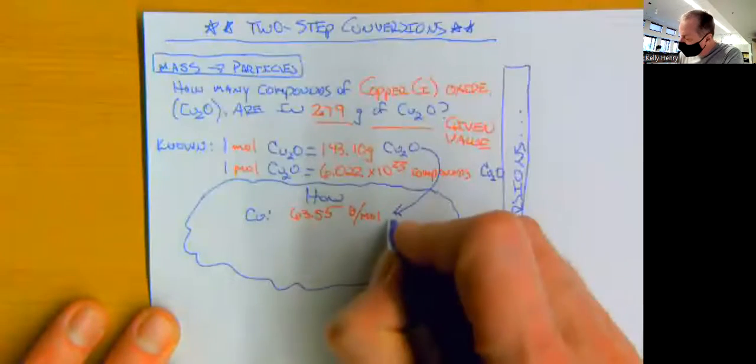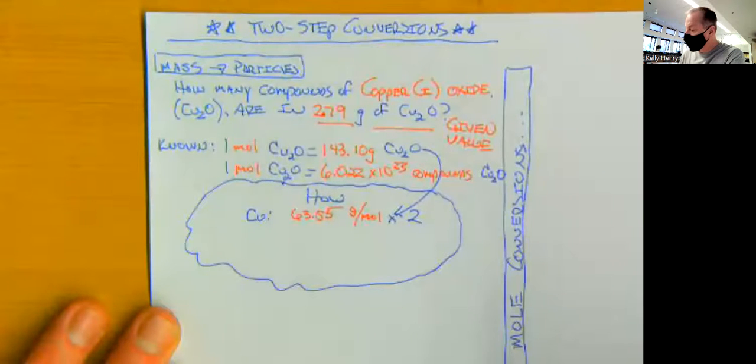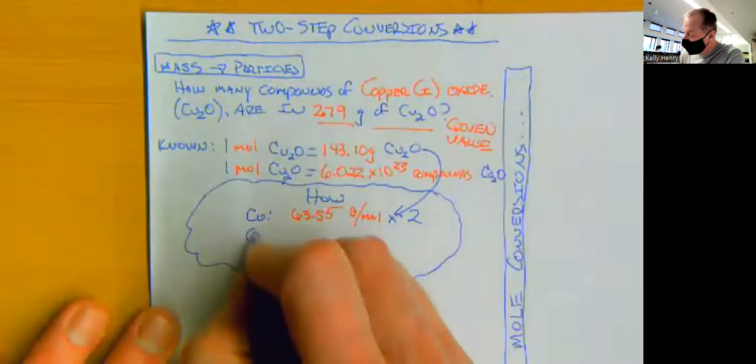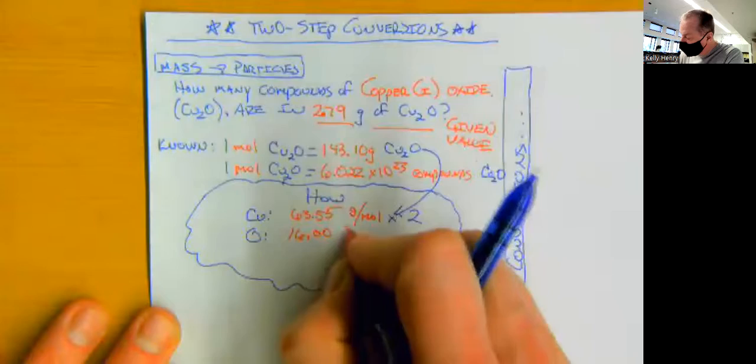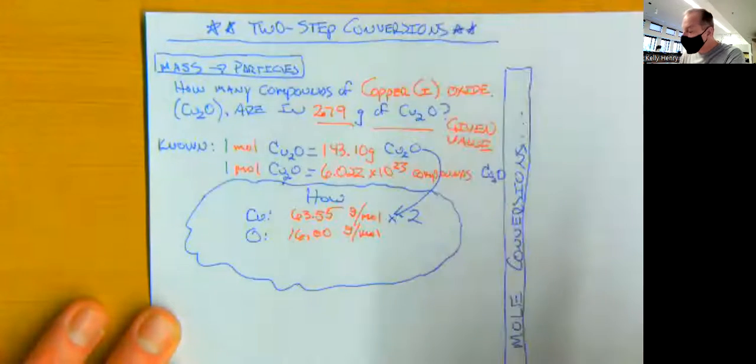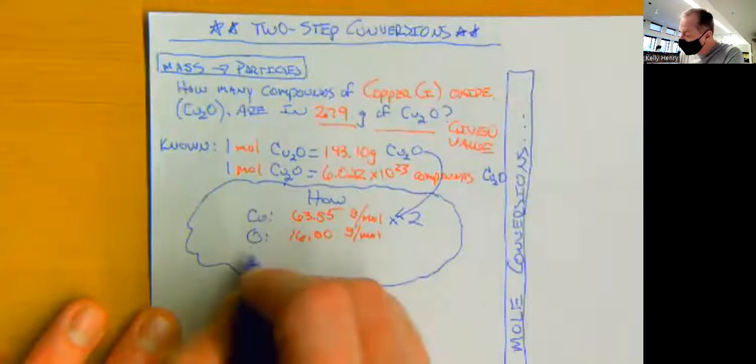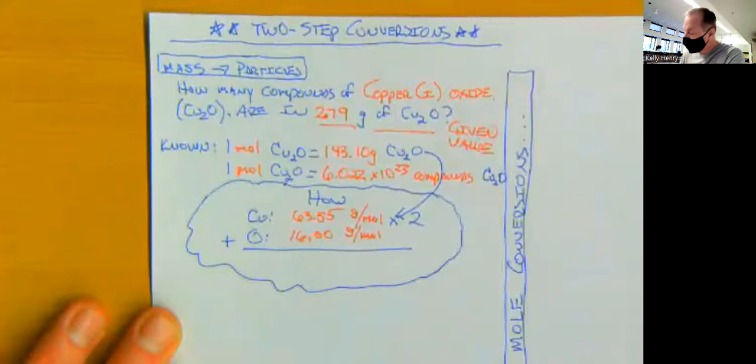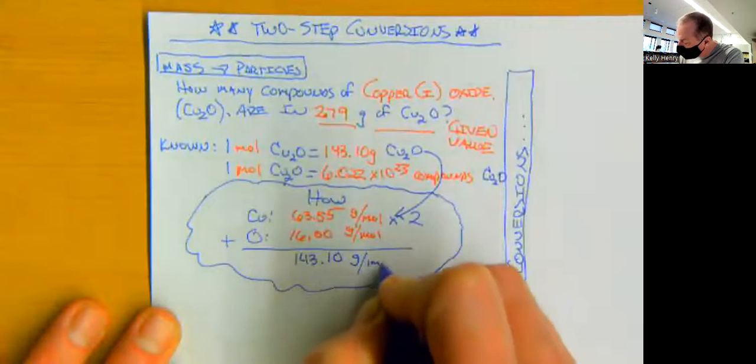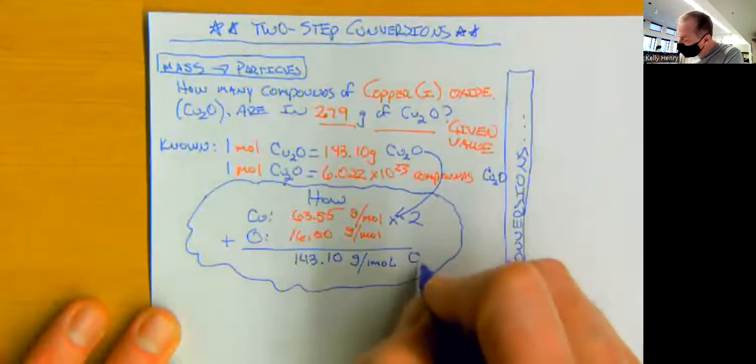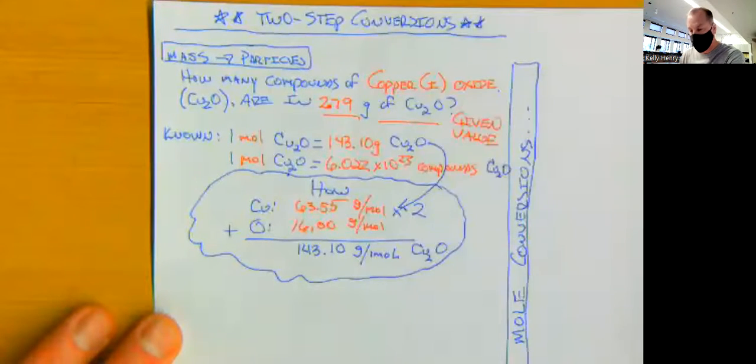But then we also have to multiply that by two, because we have two coppers in copper oxide. Then we also have oxygen, and that molar mass is 16.00 grams per mole. And in this case, we only have one oxygen, so we don't need to multiply that by anything. And then when we add that together, we end up, that's how we get our 143.10 grams in one mole of copper one oxide. And again, copper one, well, one is the charge of copper in this case.